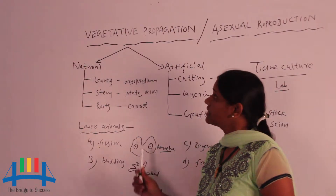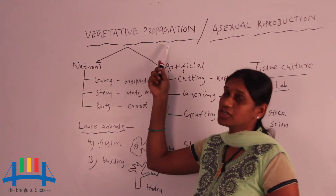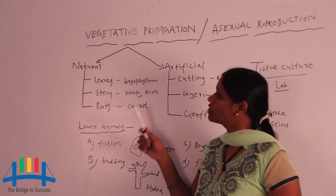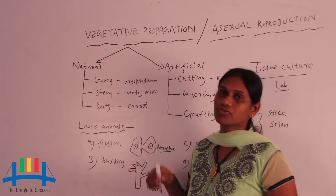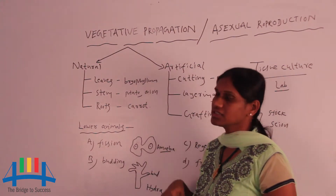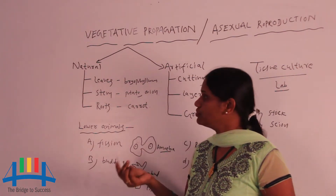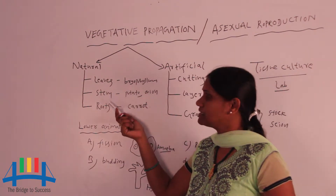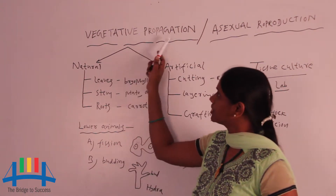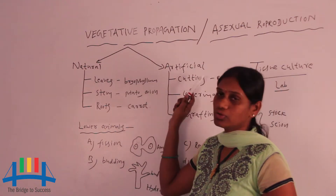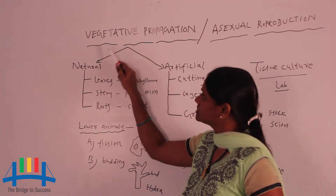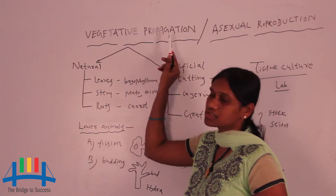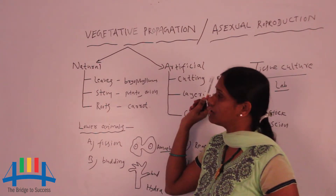Today I want to tell you about vegetative propagation, also known as asexual reproduction. Asexual reproduction or vegetative propagation means we are going to produce new plants. It is commonly divided into two types: natural vegetative propagation and artificial vegetative propagation.